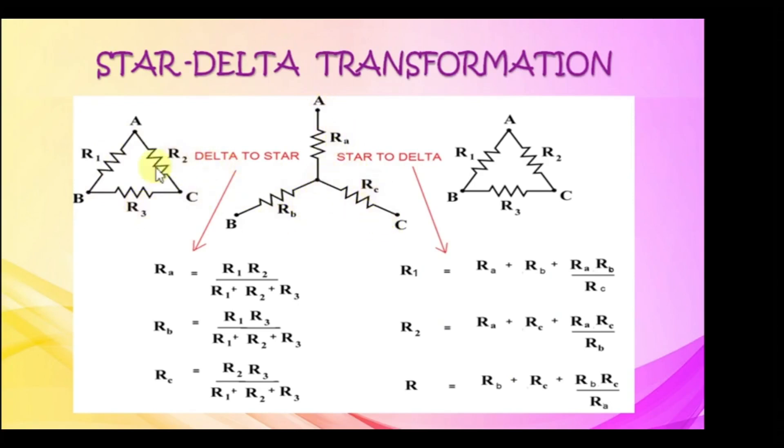To transform delta to star, the equations to find RA, RB, RC are given below. To transform star to delta,